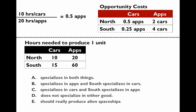The opportunity cost of producing a car for the South is 0.25 apps, and the opportunity cost of producing an app for the South is four cars. I posted another video that goes into more detail on how to calculate opportunity cost if you're still confused after class. I recommend watching that video and then coming back to watch the answers to these problems.